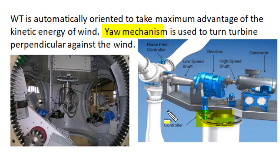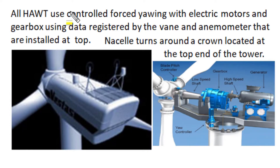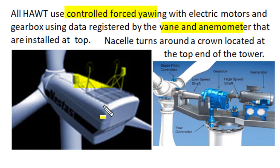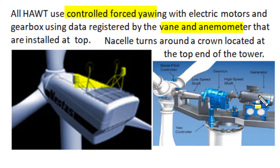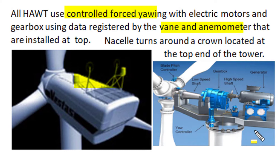All horizontal axis wind turbines have a vane and anemometer installed at the top of the nacelle body. These vanes and anemometers observe wind velocity and direction, and the data registered by the anemometer is sent to a controller inside the nacelle. A microprocessor-based controller drives an electric motor that, with a suitably attached gearbox, automatically controls the position of the nacelle bed so that the turbine blades come perpendicular to the wind blow direction. The nacelle bed turns around the crown located at the top of the wind turbine tower.